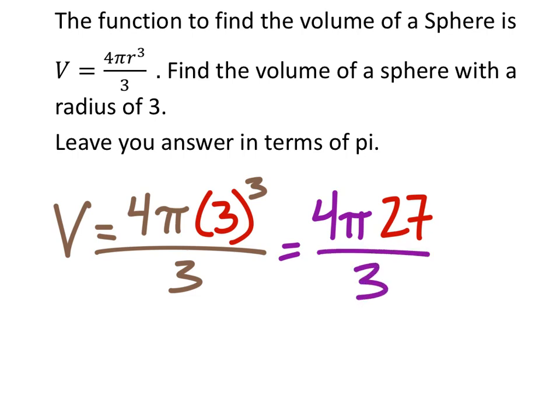Now I can use the commutative property to switch these over and multiply the 4 by 27. I'm not going to show that because I'm running out of space. What do I get, 108 over 3? And this would be multiplied by pi right here.